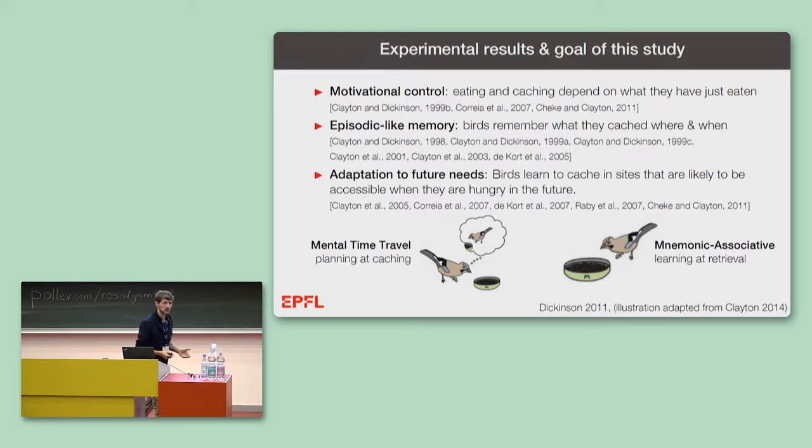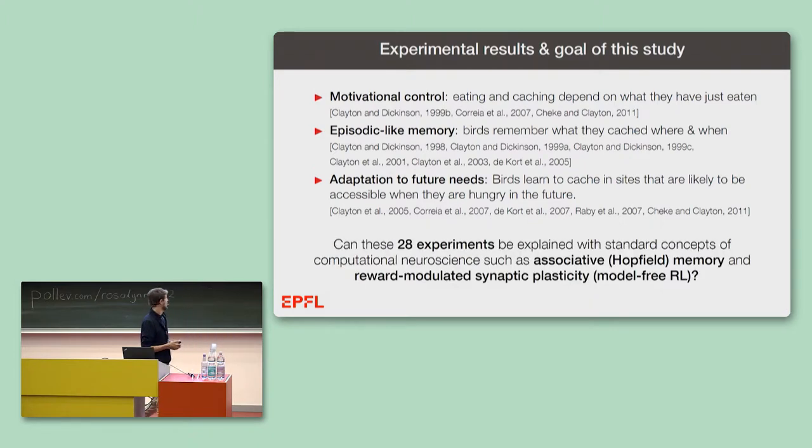One of our goals of this study, a pure computational study, was to look at this controversy with a computational model. More generally, we ask the question, can the rich behavior that we see in these 28 experiments be explained with just standard concepts of computational neuroscience, such as associative Hopfield memories or reward-modulated synaptic plasticity, that is, model-free reinforcement learning.